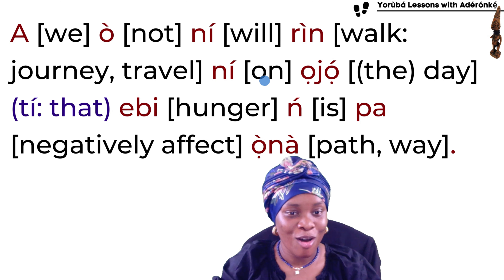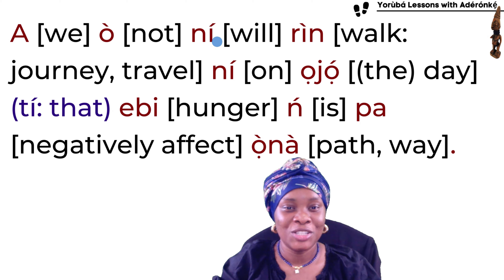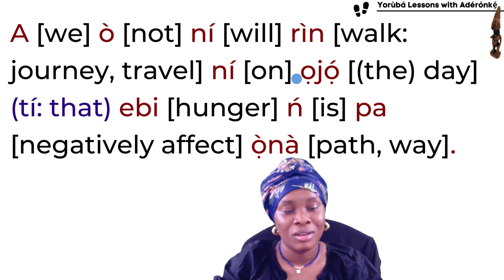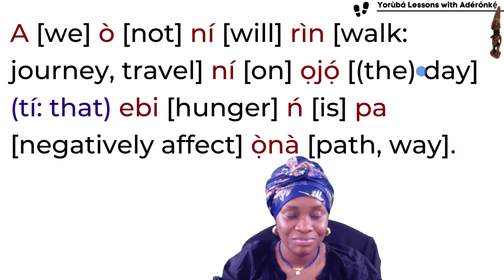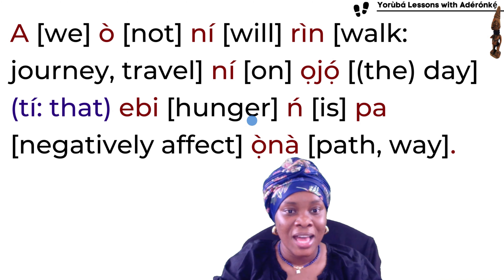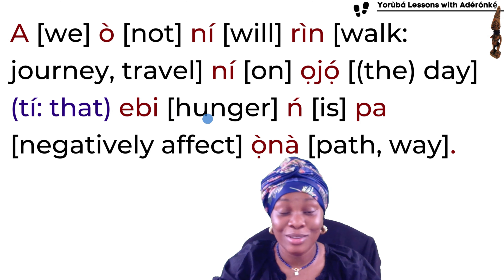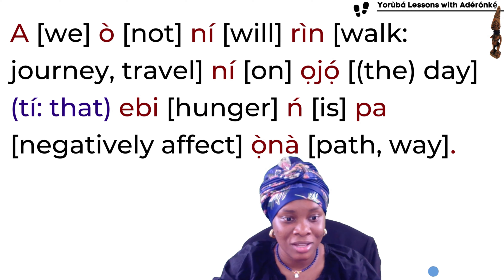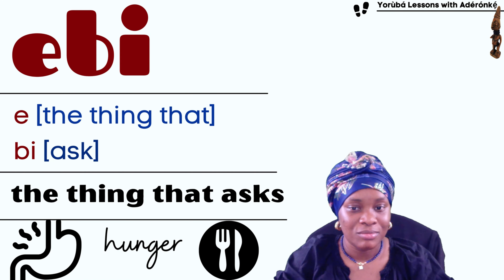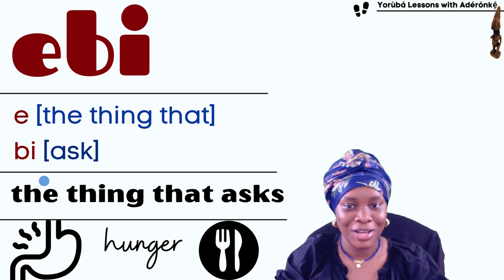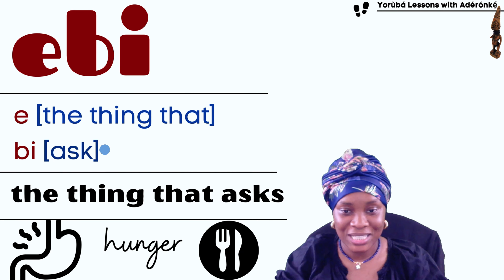If you look at the words one by one to see what they mean: 'A' is 'we.' 'O' is 'not' — it negates. 'Ni' is 'will' in this context. 'Re' is 'walk,' but extensively could also be 'to journey' or 'to travel.' 'Ni' here is like 'on.' 'Ojo' is 'day' or 'the day.' 'Tea' is 'that,' but it doesn't have to be included.